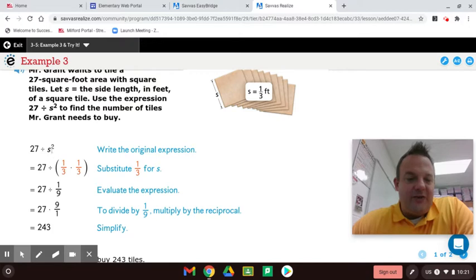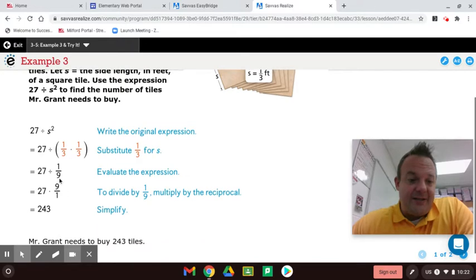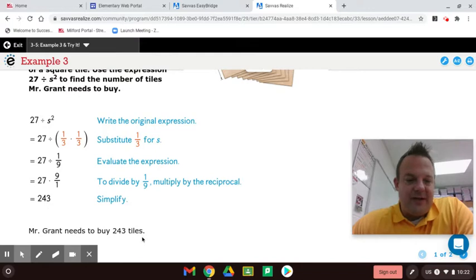Now remember, one third squared is one third times one third, not one third times two. It's one third times one third. That's one ninth. So now you have 27 divided by one ninth. Now you do LMR. Left side, leave it. Middle multiply. Right side, reciprocate. Remember the reciprocal. And you get 243. So Mr. Grant needs to buy 243 tiles.